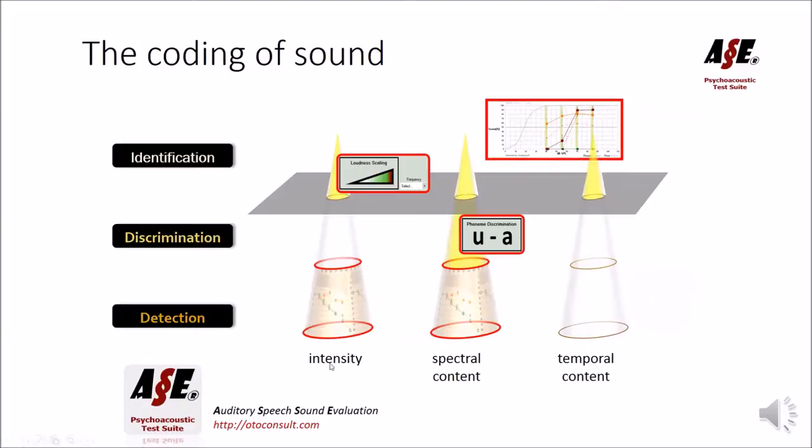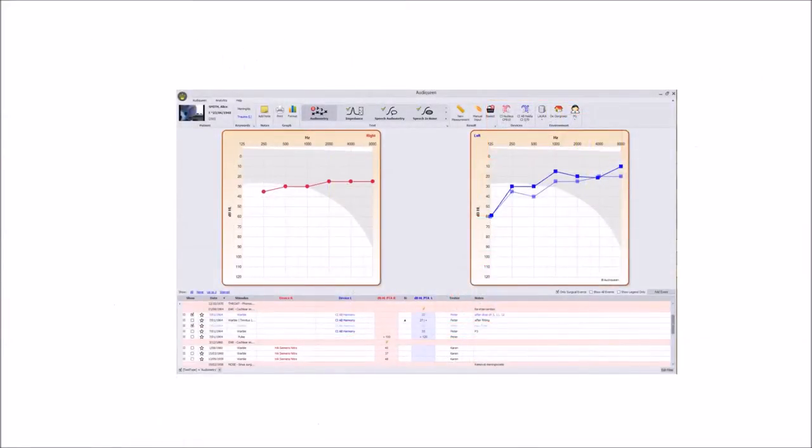For the fitting of cochlear implants, these are the most relevant tests, and if you perform them all, you will have tested over 60 different points in this patient. These points give you quite a fine-grained idea of the cochlear functioning in this patient. Now in what follows, I will show you how this works with AudiQueen, how you can launch the different ASE modules from within AudiQueen.